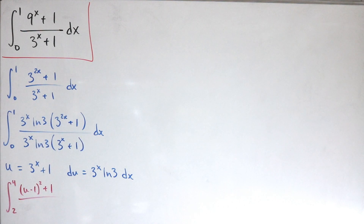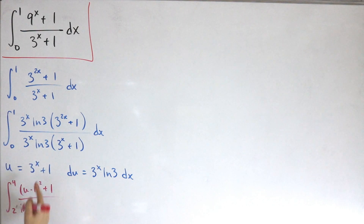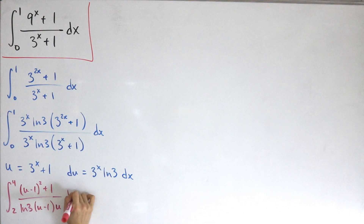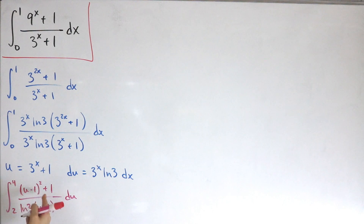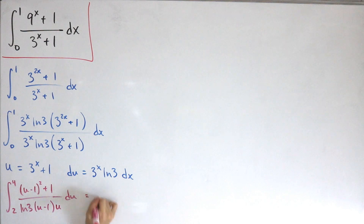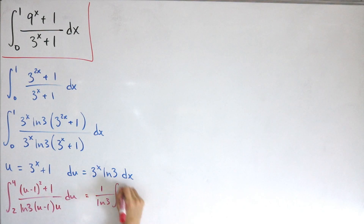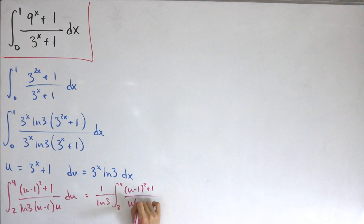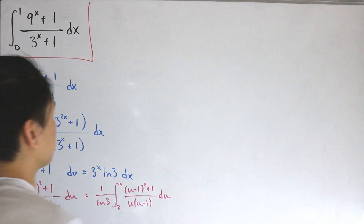Rewriting in terms of u: under the denominator we have ln of three, which doesn't change, and three to the power x plus one we simply replace with u. So we have the integral from two to four of (u minus one) squared plus one, divided by ln(3) times (u minus one) times u. Factoring out the constant, this becomes one divided by ln(3) times the integral from two to four of [(u minus one) squared plus one] divided by [u times (u minus one)] du.